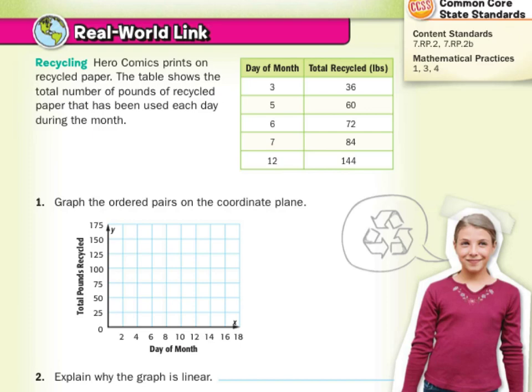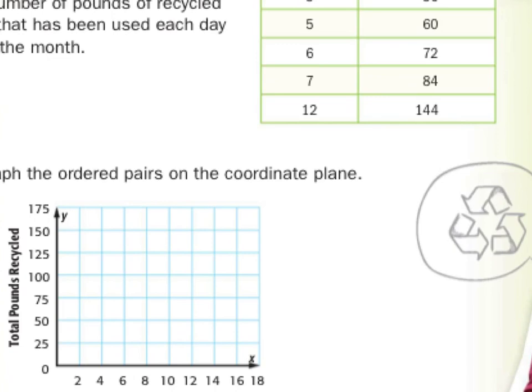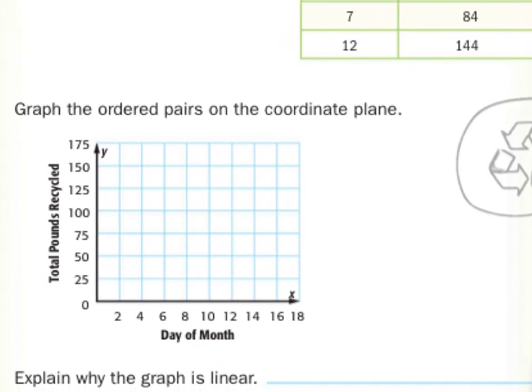And graph the ordered pairs on the coordinate plane. I'm going to zoom in a little bit here to try to get these points as close as we possibly can. Now notice our day of the month is counting by 2s: 2, 4, 6, 8. So where are we going to graph say days 3, 5, and 7? Where is 3? In between 2 and 4.